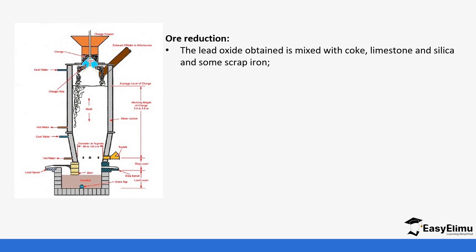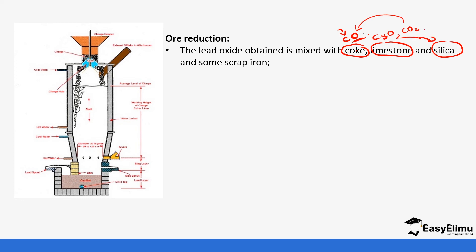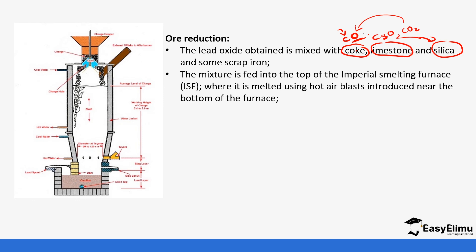In the reduction stage, the lead oxide obtained is mixed with coke, limestone, and silica. Coke helps in the production of carbon monoxide, which is the main reducing agent — coke itself is also a reducing agent but carbon monoxide is preferred. Limestone produces calcium oxide and carbon dioxide, which goes on to form carbon monoxide. The calcium oxide is used to remove silica impurities. Some scrap iron is also added as part of the raw materials. The mixture is fed into the top of the furnace where it is melted using hot air blasts.